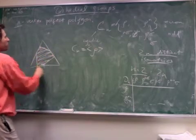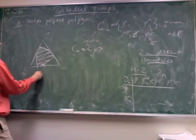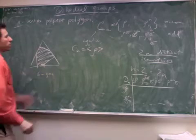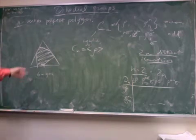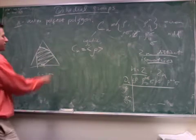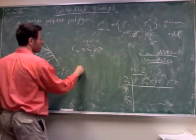and this will be the polygon preserved, Cn preserved by all these rotations, but not by reflections. So this will be Cn whose group of symmetries is C3, with C3 the group of symmetries.